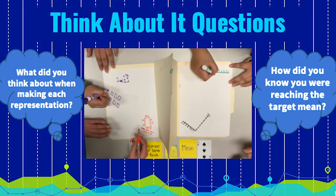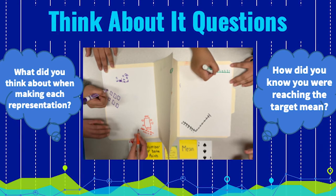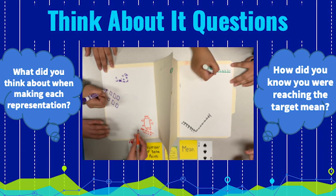Think about the following questions as you play after the game. What did you think about when making each representation? How did you know you were reaching the target mean?